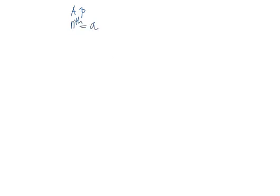For any arithmetic progression, the nth term is given as A plus N minus 1 multiplied by the common difference D. And for the GP, the nth term is given as A multiplied by the common ratio R raised to N minus 1.